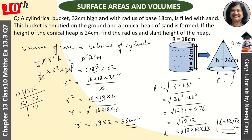So our slant height is 12√13 centimeters and our radius is 36 centimeters. These are both our answers and the question is well understood. If you liked the video, please like it and subscribe to the channel, and don't forget to share it with your friends.